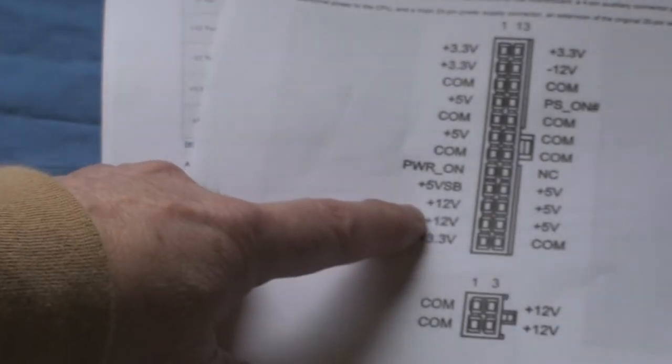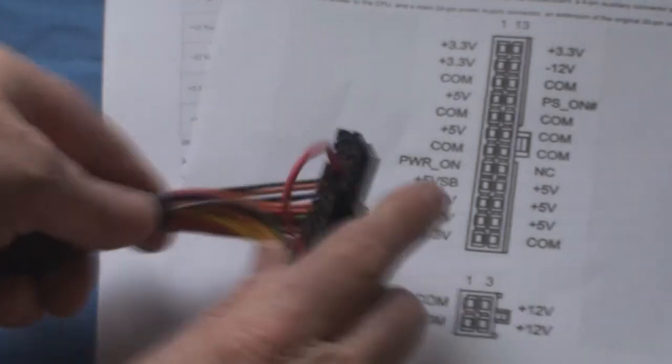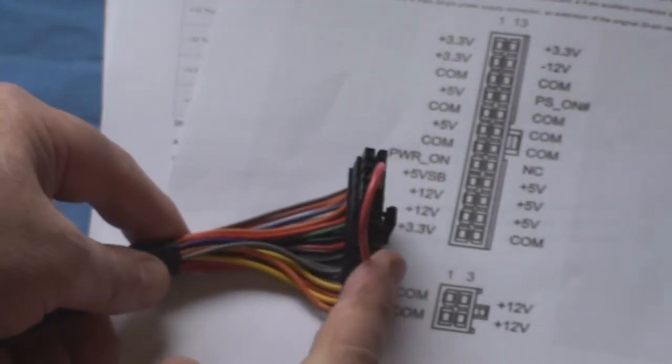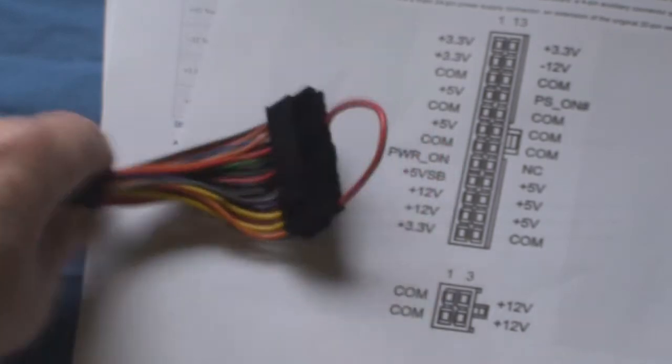Then the only other plug that you need to look at is one that says plus 12 volts. So between plus 12 volts and common, your heater goes, and between PS on and common, a loop like that goes. And that's all you have to do. You don't have to modify the power supply at all.